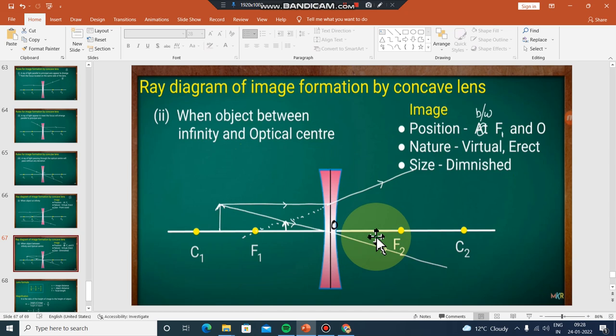Concave lens is similar to convex mirror. Concave mirror and convex lens work inversely - the lens and mirror concepts are related.